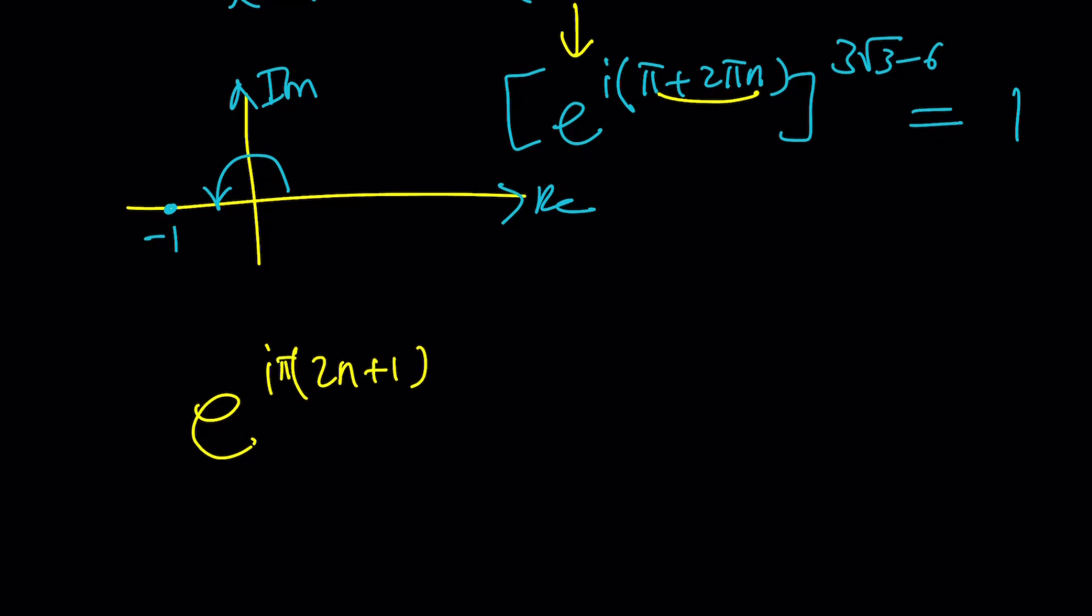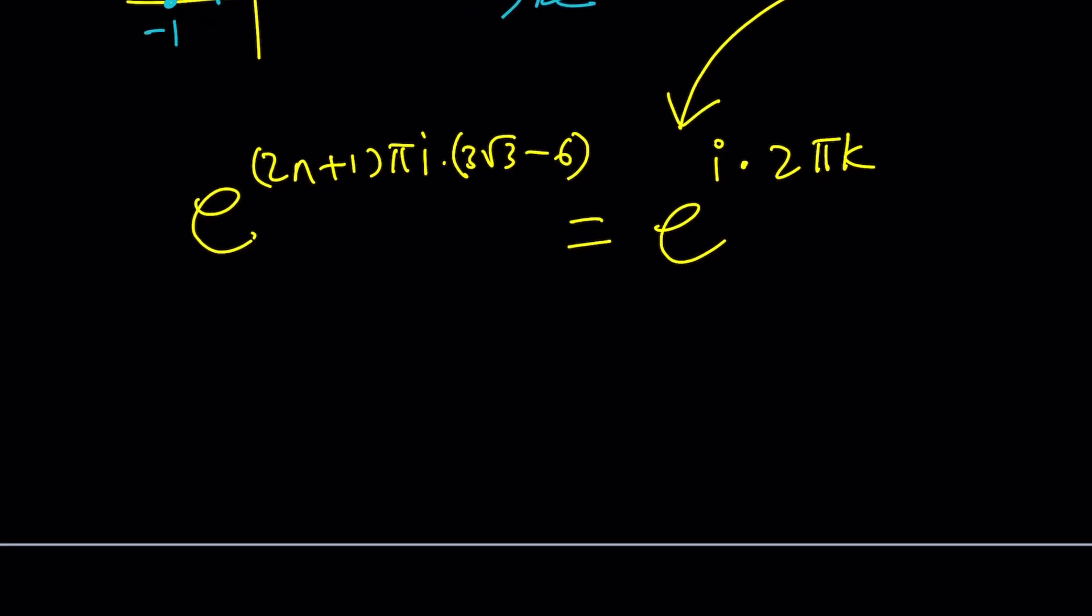I can also write 1 as a complex number or complexified. Here, we kind of have a product, so we can write it as e to the power i times, and by the way, this can be simplified to 2n plus 1 pi. So I can write it as i pi and then multiply by 2n plus 1 or 2n plus 1 pi i. It doesn't matter how you write it. It's the same thing. Times 3 root 3 minus 6. A lot of factors. And then, let's write the 1 as a complex number. e to the power i times 2 pi k. Multiples of 2 pi. That's the same as 0 radians or 2 pi radians or 4 pi radians and so on and so forth.